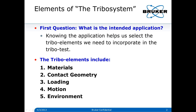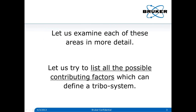My five elements, which then have subcategories, are: materials, contact geometry, loading, motion, and environment. If we consider each of these five things and what's important in them, we can both define the tribo test and characterize the tribo system. Let's examine each of these in more detail and try to list all the possible contributing factors which define a tribological system.